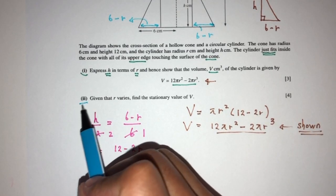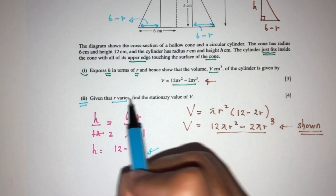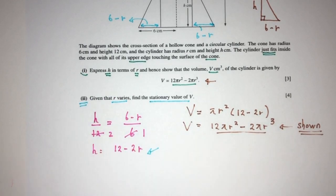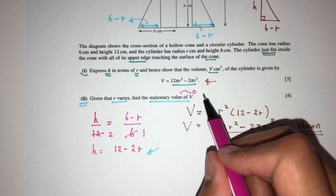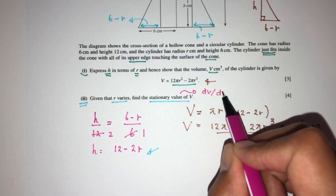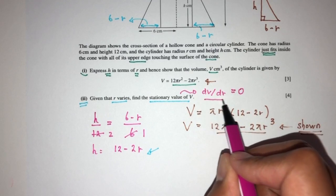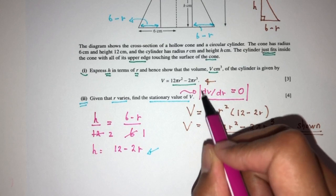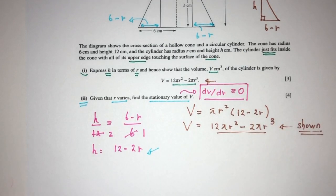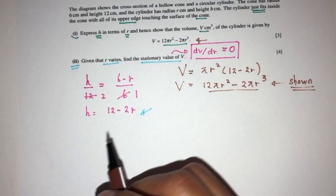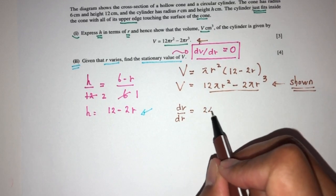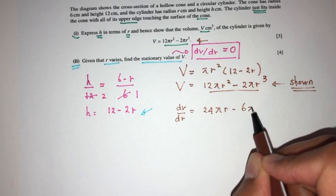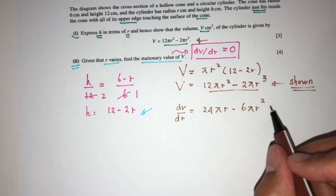Now for part 2, given that R varies, find the stationary value of V. So pretty easy. As we must know by now, at the stationary value, we have to know dV/dR has to be equal to 0. So we have to understand that's the main equation we have to solve to find the value of V for our stationary value. So first, what is dV/dR? That will be 24π R minus 6π R². Now equate that to 0.